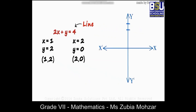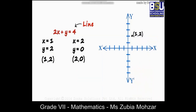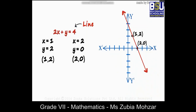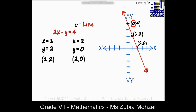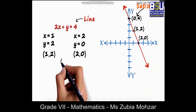On the coordinate plane, (1, 2) is located here, and (2, 0) is located here. This is the line of 2x plus y equals 4. To verify the line is correctly drawn, take another point on the line — for instance (0, 4). If we substitute 0 for x and 4 for y, we do get 4. It satisfies the equation.